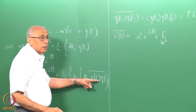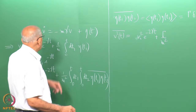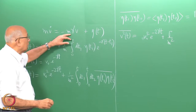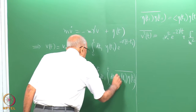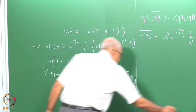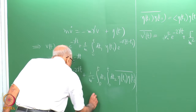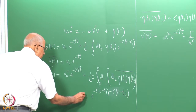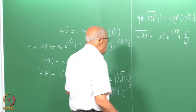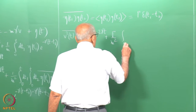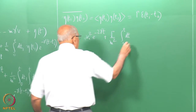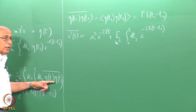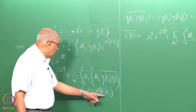When we do the delta-function integration setting t2 equal to t1, we must account for the integrating factor e to the minus gamma(t minus t1) sitting in the solution. So the result is capital-Gamma over m squared times the integral from 0 to t of dt1 times e to the minus 2 gamma(t minus t1), because the delta function fires and sets t2 equal to t1, giving a factor of 2.